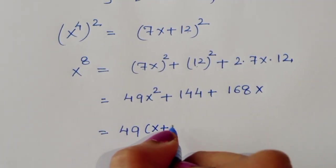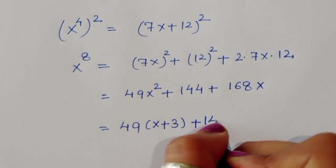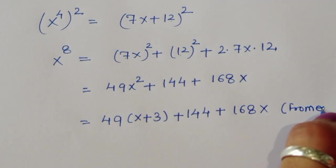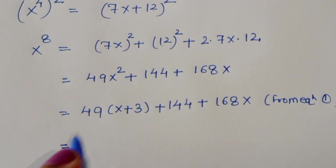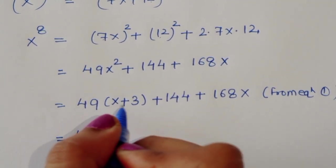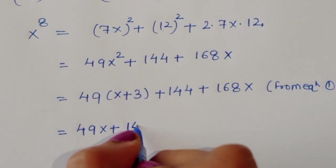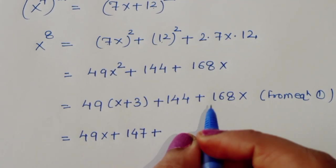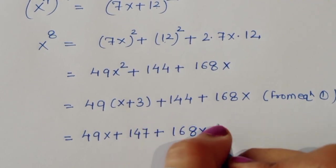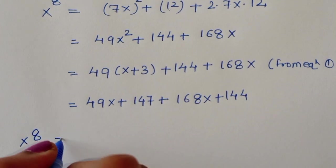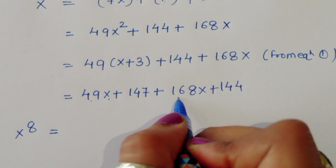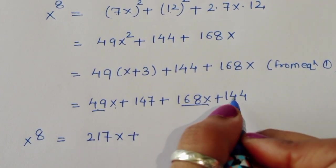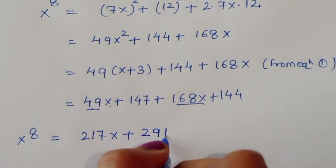Expanding: x⁸ = 49x + 147 + 144 + 168x. Combining like terms: 49x + 168x = 217x and 147 + 144 = 291. So x⁸ = 217x + 291.